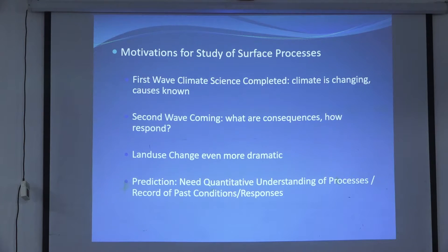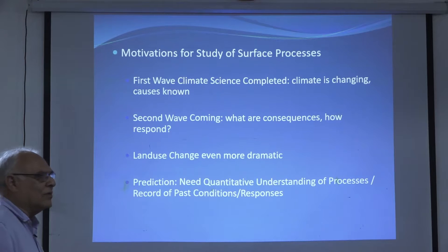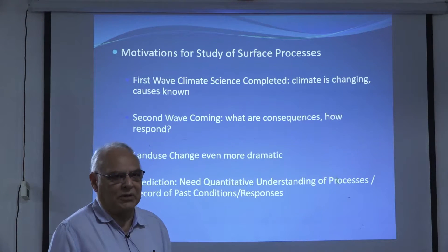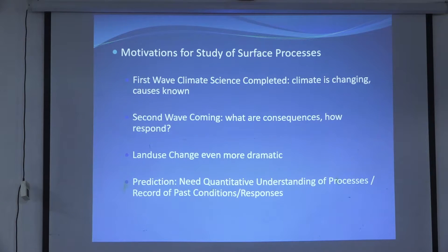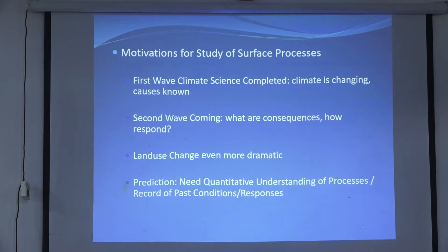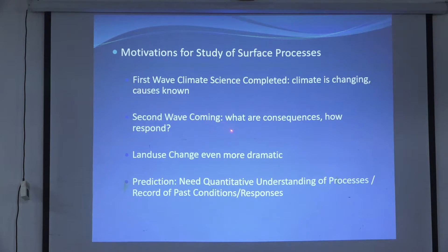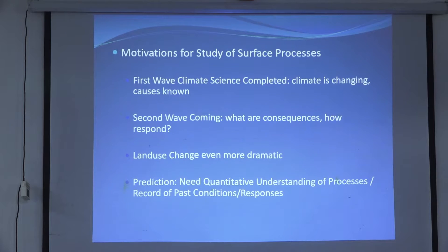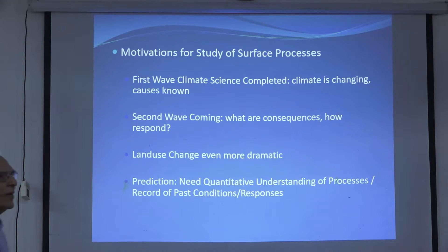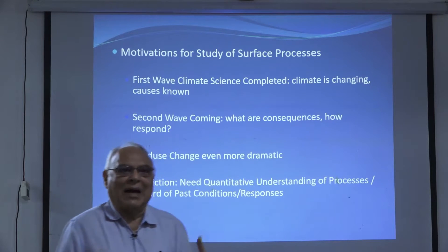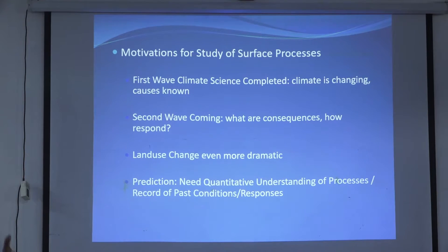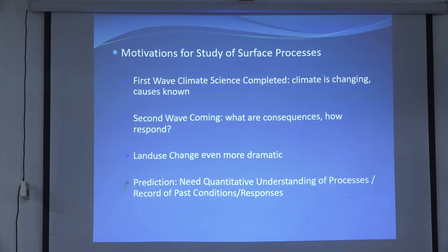A very strong motivation for Earth surface processes over the last three decades has come from studies relevant to climate change. The first wave of climate science established that climate is changing. The second wave asks: what are the consequences and how do we respond? Not only climate science, but land use — climate and land use together are causing modifications in the natural system that was dependent on the interaction between climate, tectonics, and erosion.